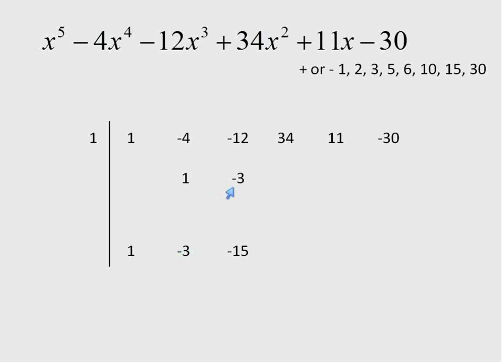1 times negative 3 is negative 3. Join together those terms and it'll give me negative 15. Now I'll multiply 1 times negative 15 gives me negative 15. 34 minus 15 is 19. 1 times 19 is 19. 11 plus 19 is 30. 1 times 30 is 30. And 30 minus 30 is 0. Good.